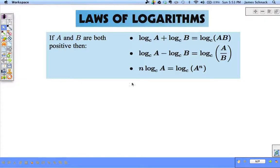So here are the big three. If A and B are both positive, then log A plus log B, we can combine those together to become log A times B. And the base must be the same for these all the time. So one log with a base, second log with a base, added together, we can combine them together with the same base.